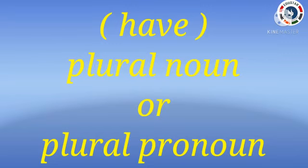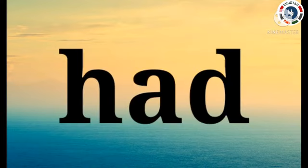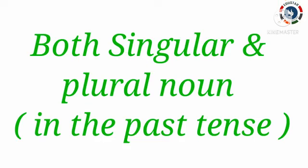Children, next I am going to explain about had. Kutis, already you know, had is a past having verb. So, we use had only in the past tense. Children, we use had when we mention about both singular and plural nouns in the past tense. We use had to talk about what happened in the past.